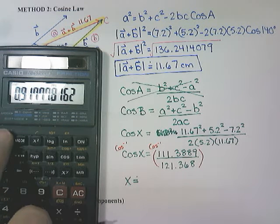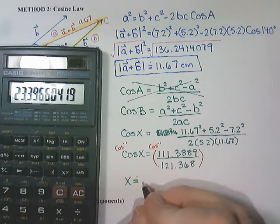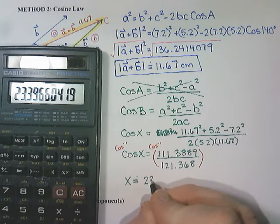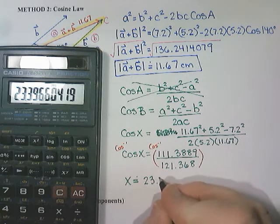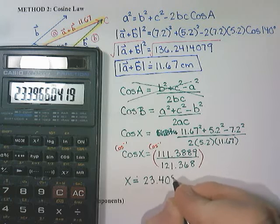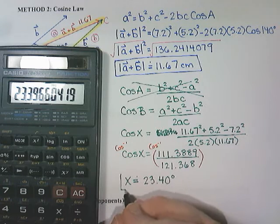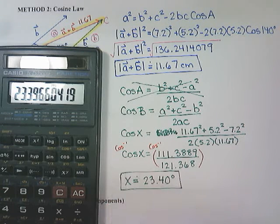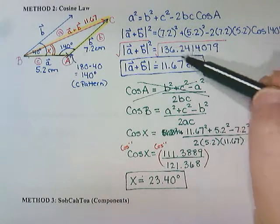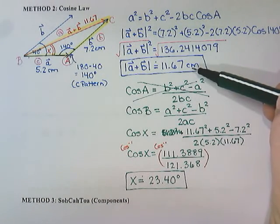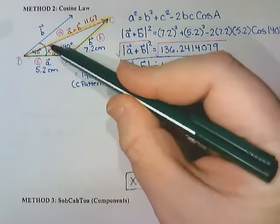And I get approximately 23.396, so that would round to 23.40 degrees. Okay, so we had already calculated in the first part that the magnitude was 11.67 centimeters. We now know that this angle that it makes with vector a is 23.40 degrees.